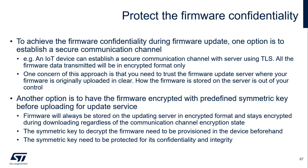Confidentiality is also a concern of the secure firmware update. To achieve firmware confidentiality during firmware updates, one option is to use a secure communication channel. For example, an IoT device can establish a secure communication channel with the server using TLS. All the firmware data transmitted afterwards will be encrypted. One concern of this approach is that you need to trust the firmware update server where your firmware could be originally uploaded in clear.